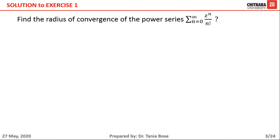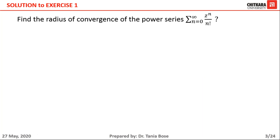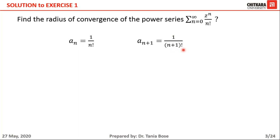So the first question — we did a very important topic yesterday: how to calculate the radius of convergence and how to get the Taylor series expansion. Let's look at the solution. If you compare this power series with the general power series, you will obtain the value of a_n as 1 upon n factorial. Yesterday I told you we had two formulas to calculate the radius of convergence. Whenever factorial terms are there, cancellation is possible, so we apply the first formula. We can quickly calculate the next term a_{n+1} as 1 upon (n+1) factorial.